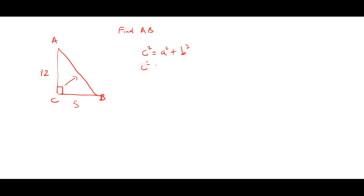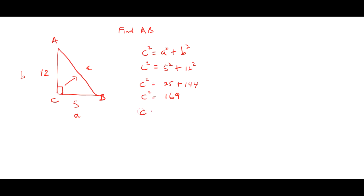C is always the hypotenuse in the formula. So C squared is equal to A squared plus B squared. Since the triangle is already labeled, this is C, this is A, and this is B. So it will be 5 squared plus 12 squared. Therefore C squared is equal to 25 plus 144, which gives C squared equal to 169. Therefore C is equal to the square root of 169, which is 13. So this side will be 13.